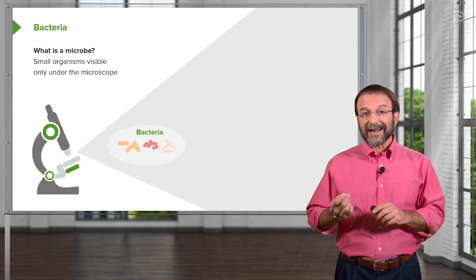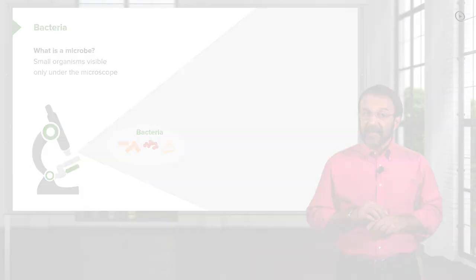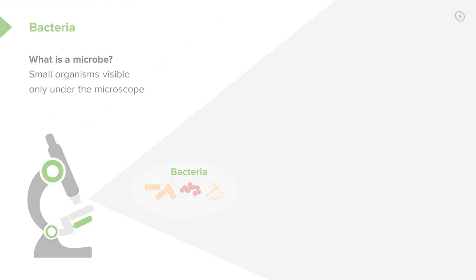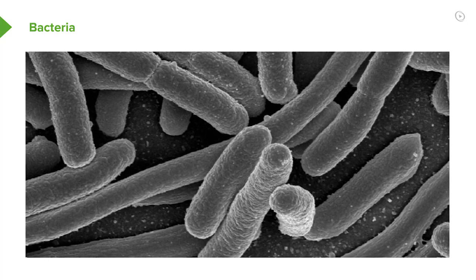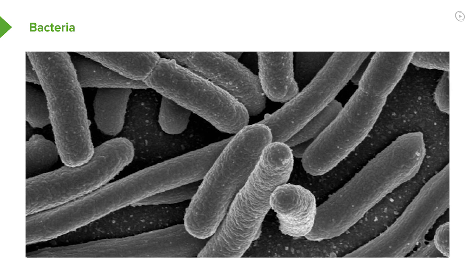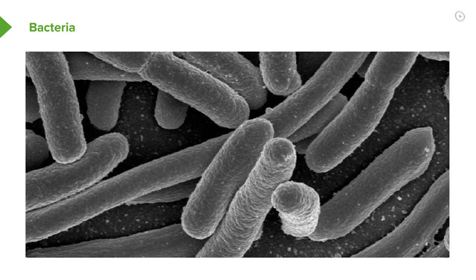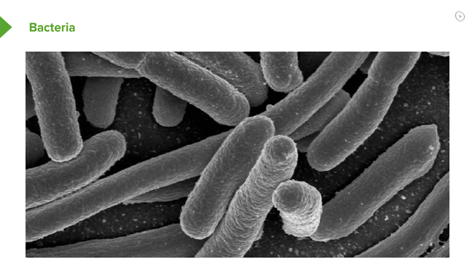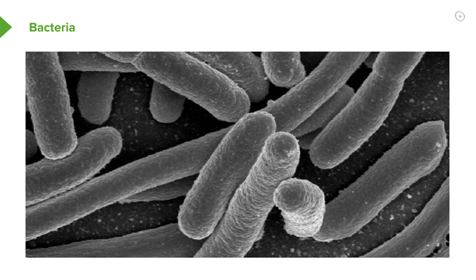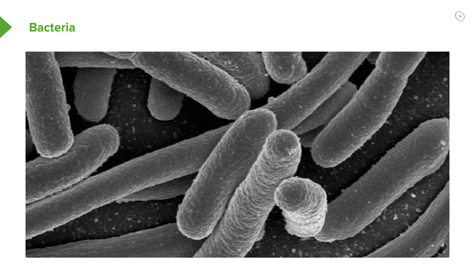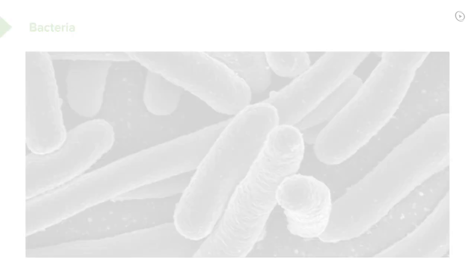There are a number of different kinds of microbes that we're going to be talking about, and the first group is called the bacteria. Here is an electron micrograph — a high magnification image of a common bacteria that's in your intestine, E. coli. You can see that they're rod-shaped, they're individual cells, and they have a number of properties that we're going to be discussing. This is magnified about a hundred thousand times.